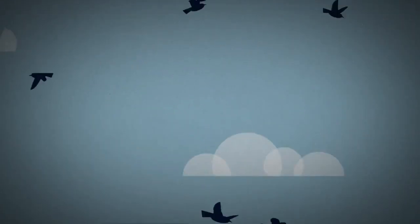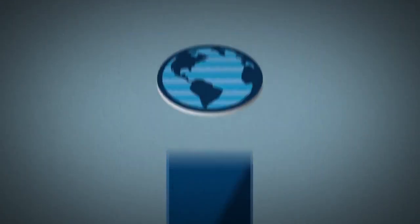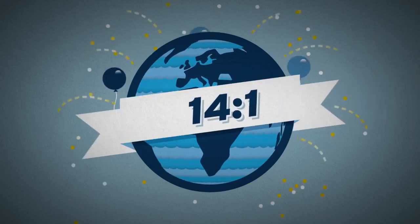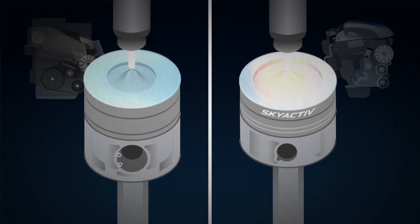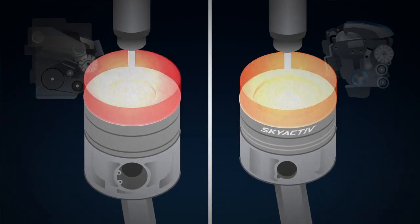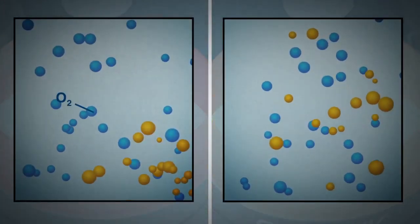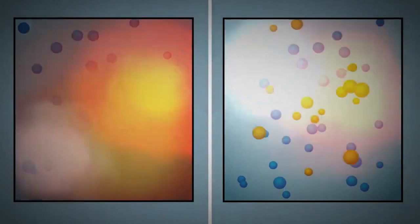First, we defied convention by dropping the compression ratio to the lowest in the world for a diesel, 14 to 1. This delays combustion by just half a millisecond, which is enough time for the air and fuel to mix more thoroughly, reducing hot spots of oxygen and fuel that would otherwise turn into pollutants.